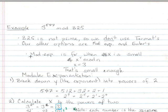3 to the 547 mod 825. Now we know that 825 is not prime. Therefore, we do not want to use Fermat's. Our other options are modular exponentiation and Euler's. Modular exponentiation is for when x is small. Remember, we have this form x to the y mod n. In our case, x is 3 again.